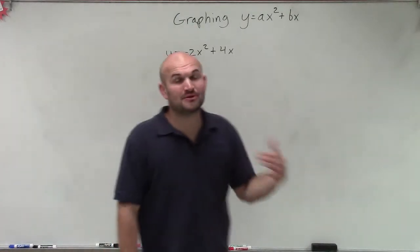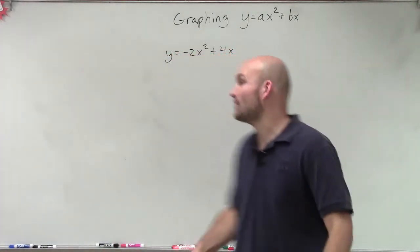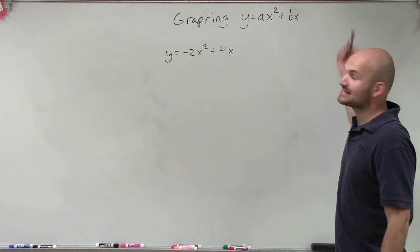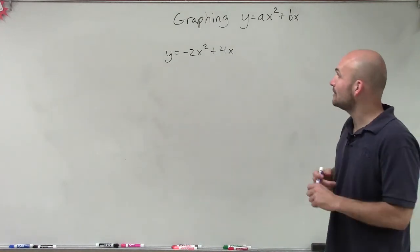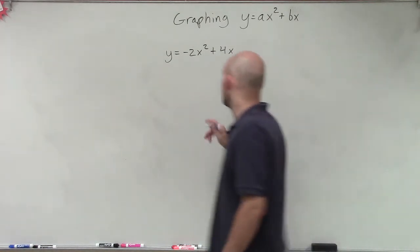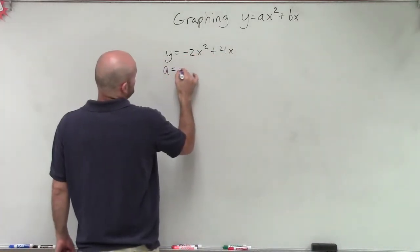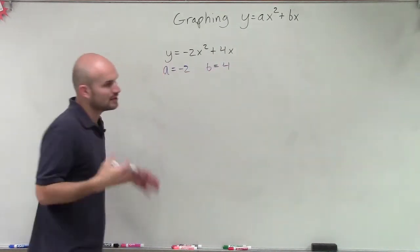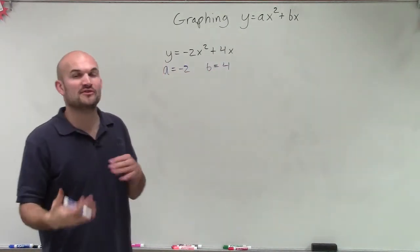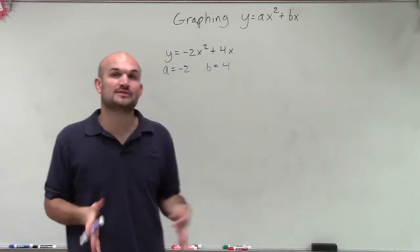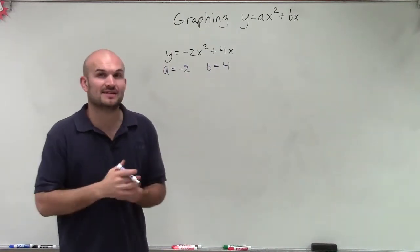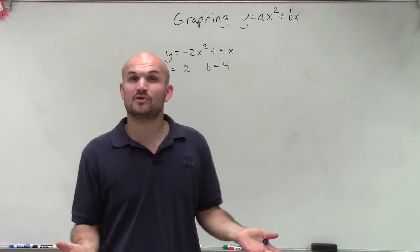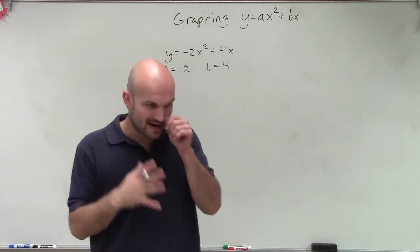We're going to be graphing some equations that are in the form of y equals ax squared plus bx. We can label a as equal to negative 2 and b equals 4. Rather than factoring, I'm going to graph this using our same method as before by creating a table of values.